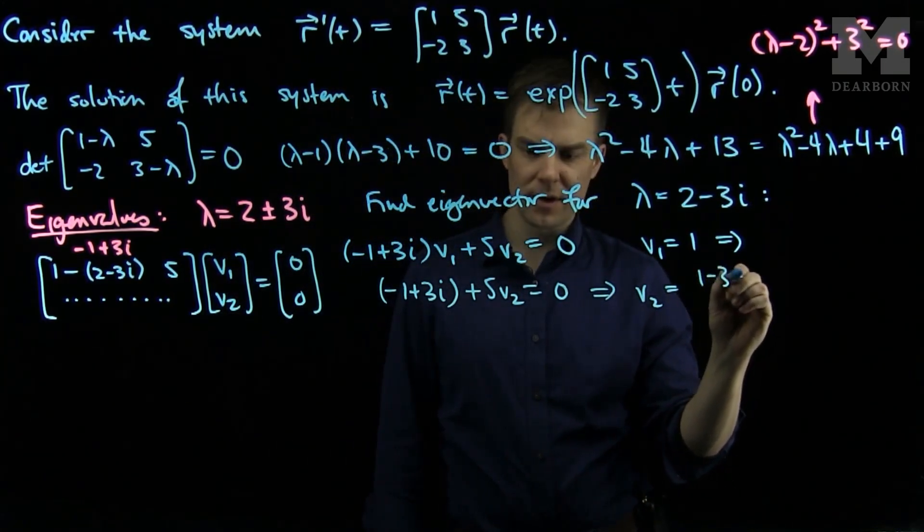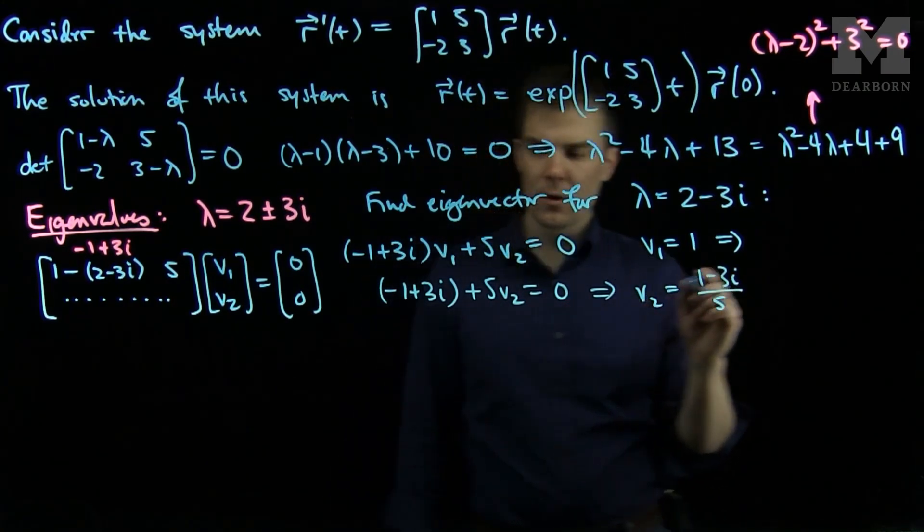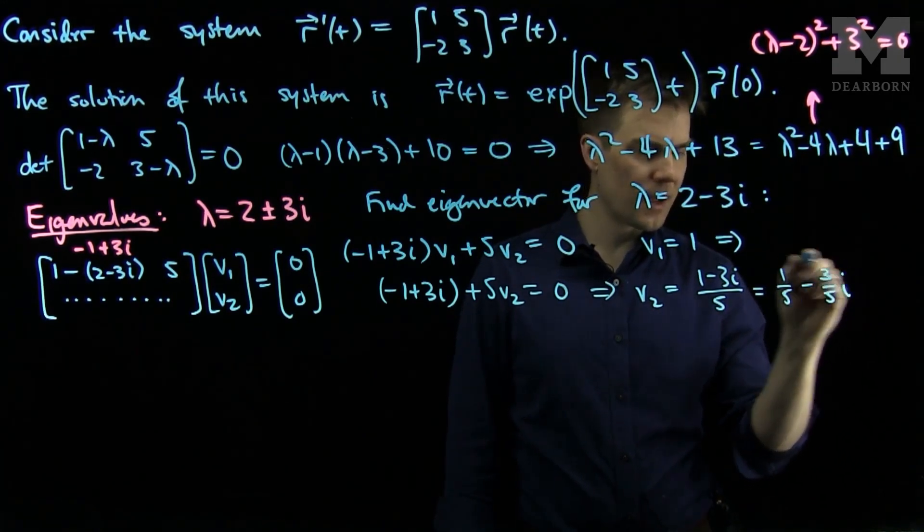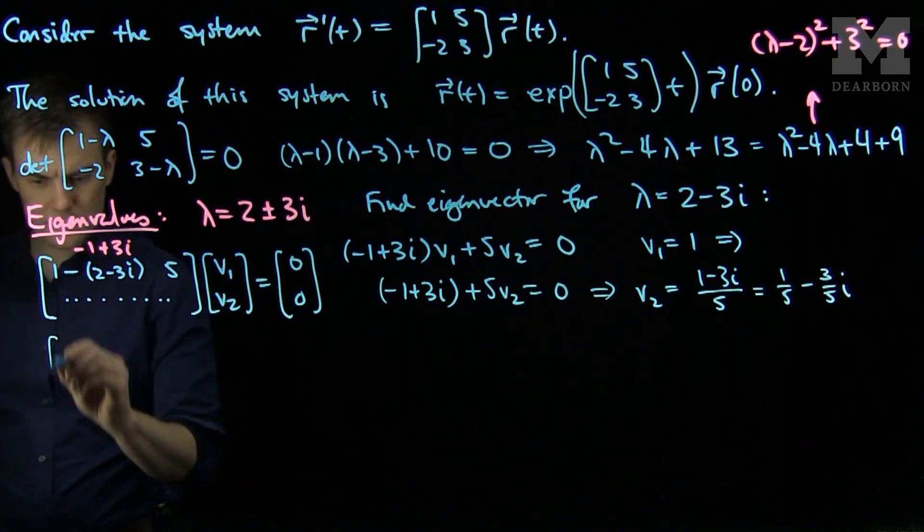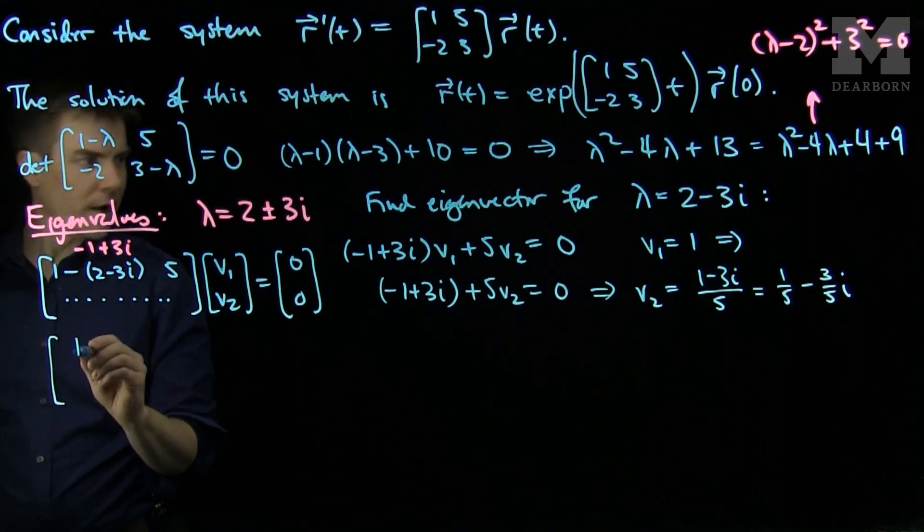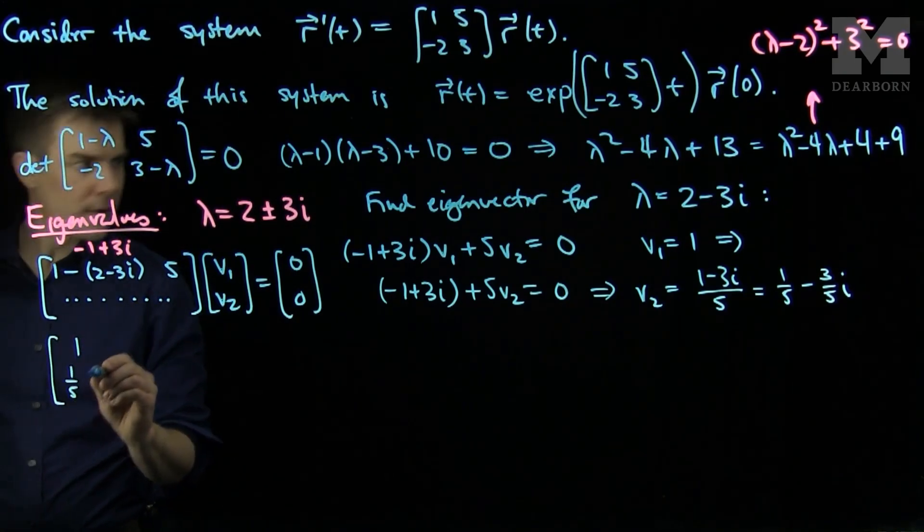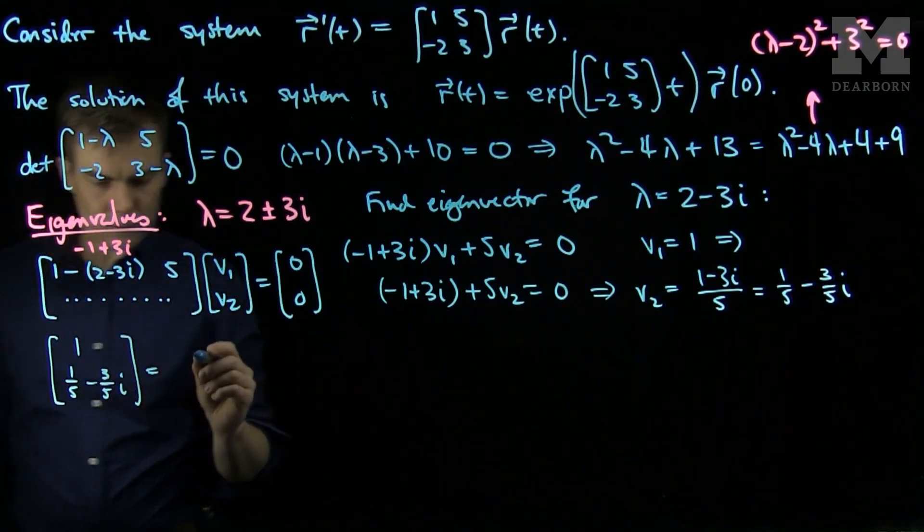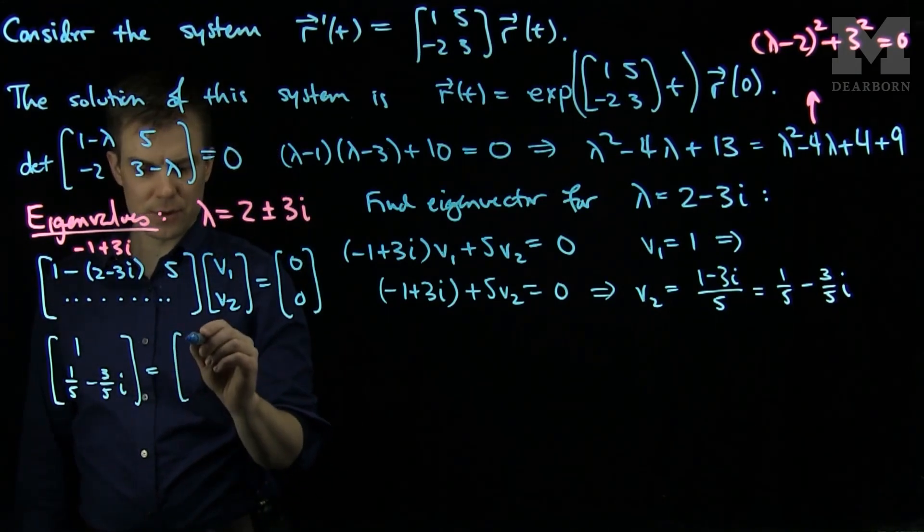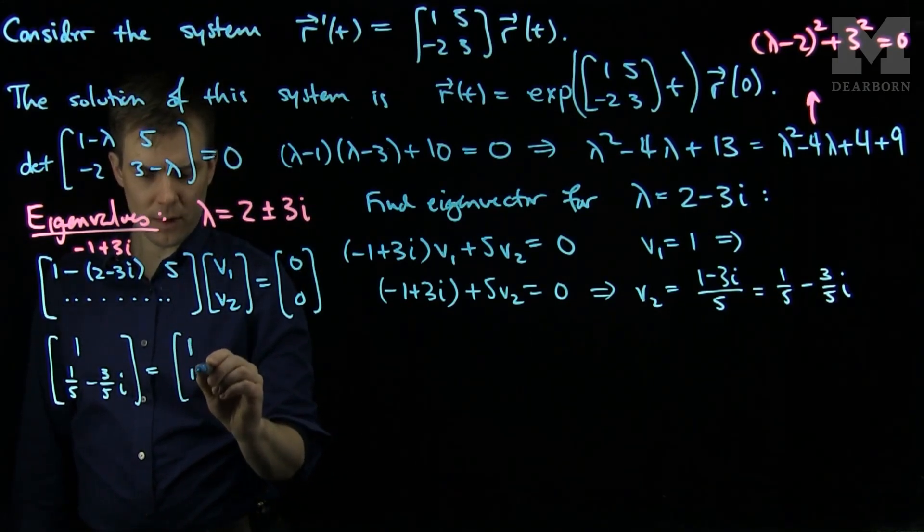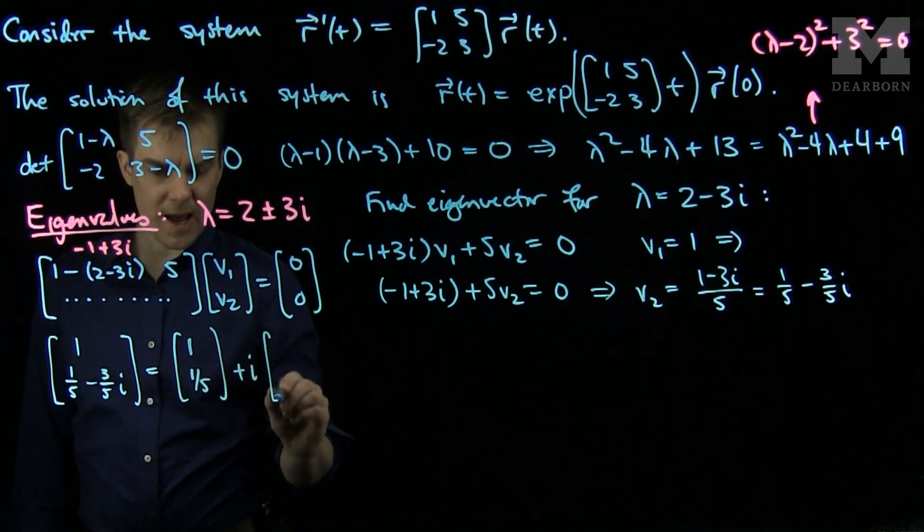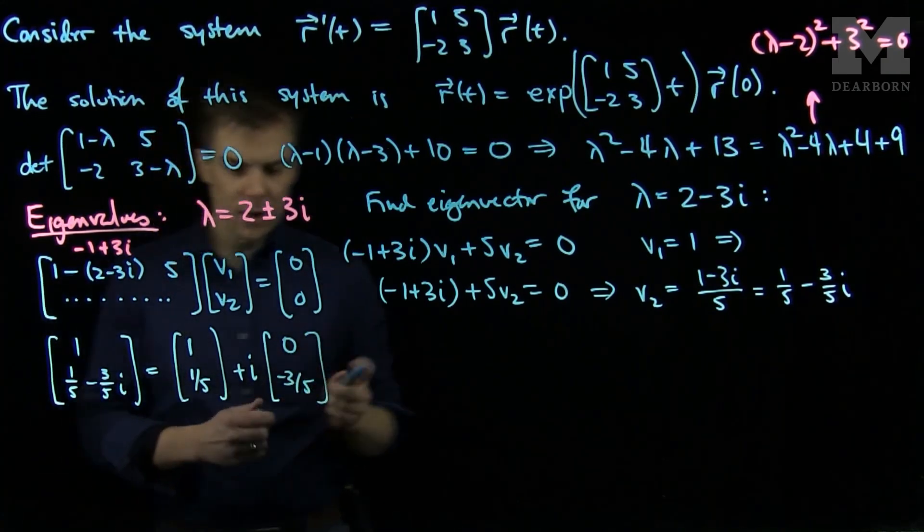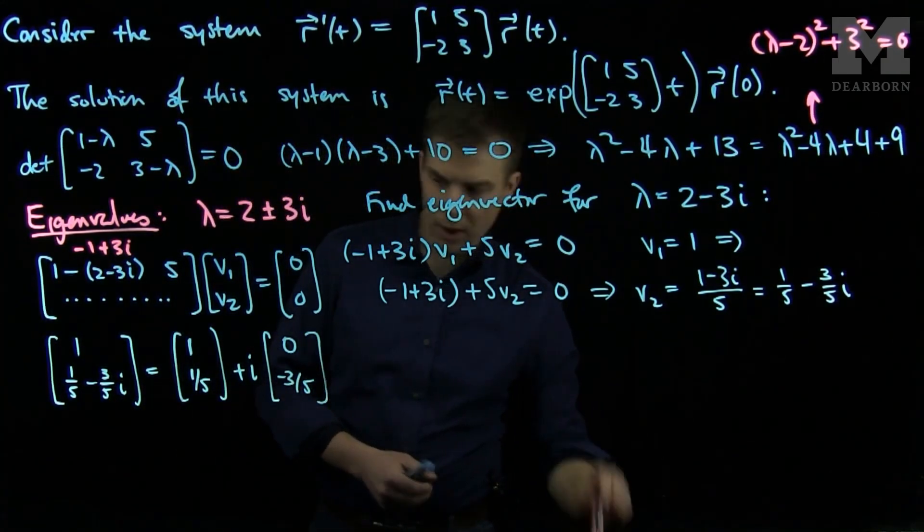This tells us that v₂ will be (1-3i)/5, or equivalently, 1/5 - 3i/5. Our eigenvector is [1, 1/5 - 3i/5], which we split into real and imaginary parts: [1, 1/5] + i[0, -3/5]. My eigenvector has been decomposed into its real part and imaginary part.